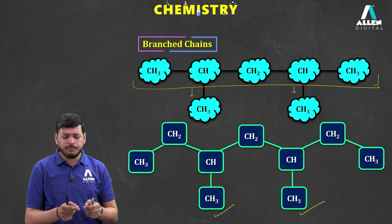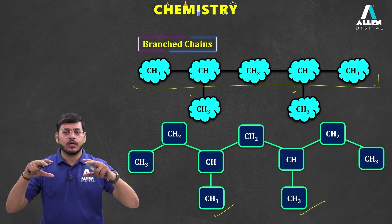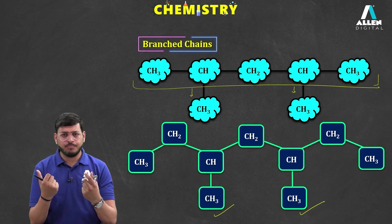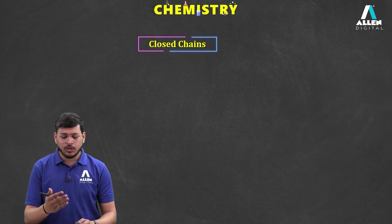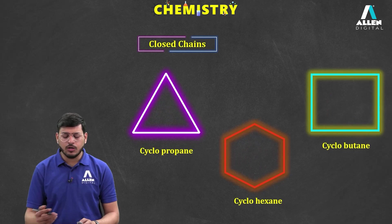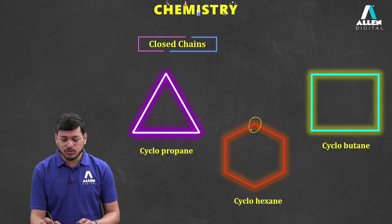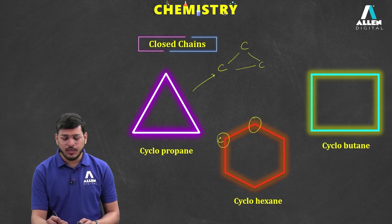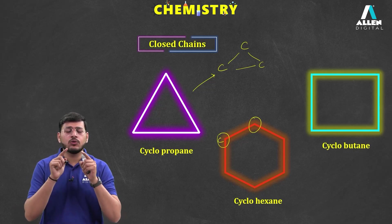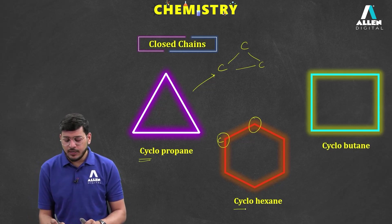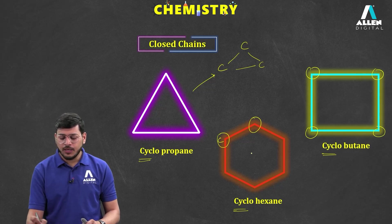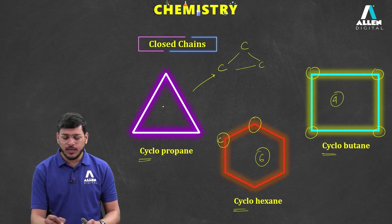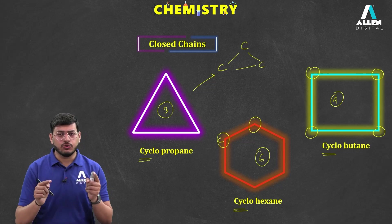When the branch is there versus when the straight chain is there, they are different compounds with different names. In a closed chain or ring chain — for example cyclopropane, cyclobutane, or cyclohexane — the carbons are connected at corners to form a ring. Each corner represents a carbon atom. Cyclo- is used as a prefix when the chain is in a closed ring form.